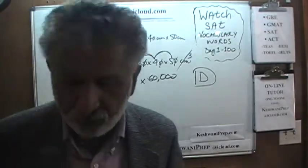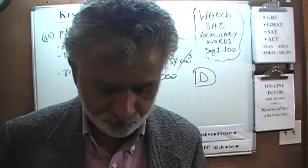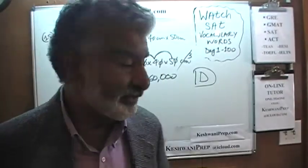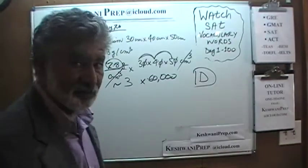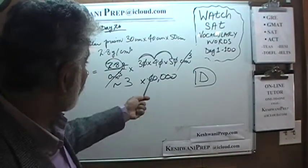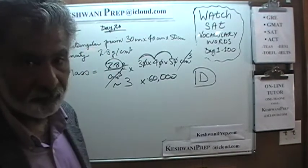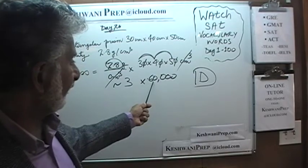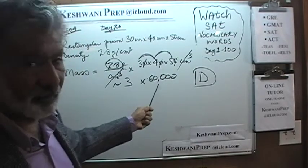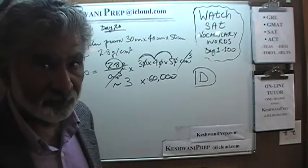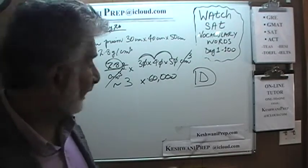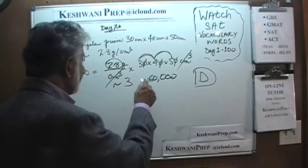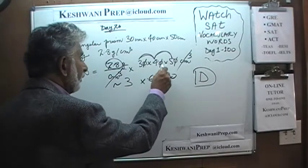As you look at the answer choices, all the other choices are ridiculous. Answer choice C is 16,800 — for those people who missed one zero. If you mistakenly say 6,000 instead of 60,000, you will end up picking answer choice C. Pay attention. Make sure you count all three zeros: 1, 2, and 3.